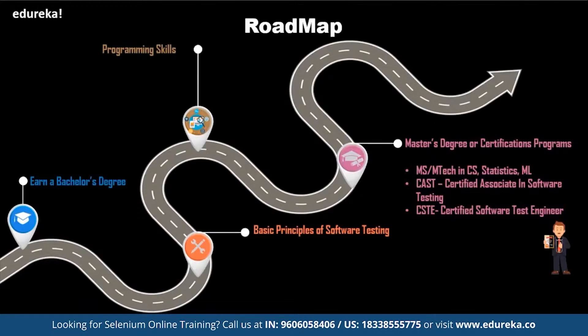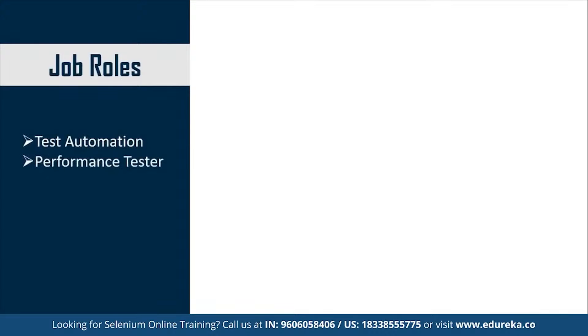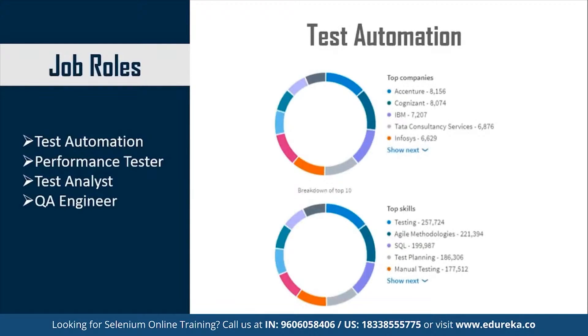Now let's look at the job roles for a test automation engineer. Some of the most common job profiles include Test Automation, Performance Tester, Test Analyst, and QA Engineer. Here you can see the graph for the top companies in test automation, and some of the big names are Accenture, Cognizant, IBM, TCS, and Infosys.